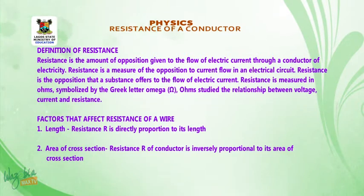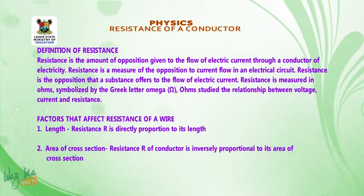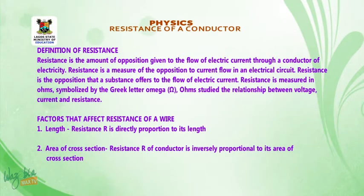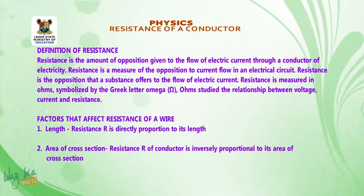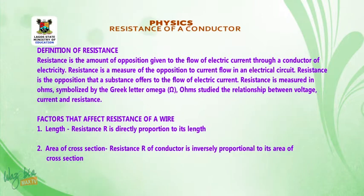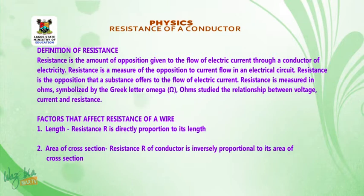Resistance is the opposition that a substance offers to the flow of electric current. What we are simply saying is that resistance is just the amount of opposition — the endurance to the flow of electric current in a conductor or in a circuit. And resistance is measured in ohms,